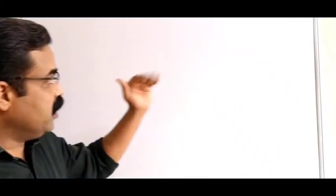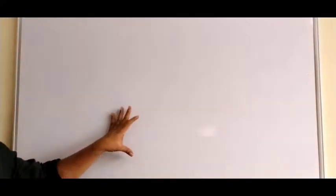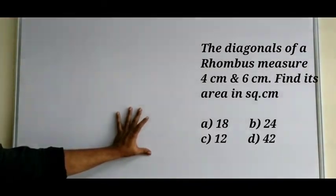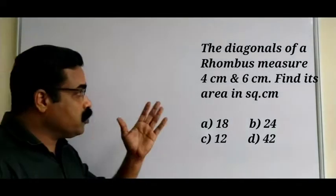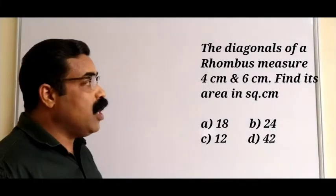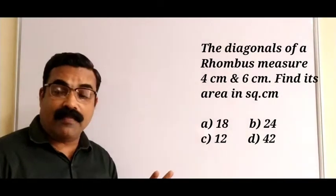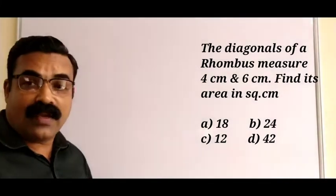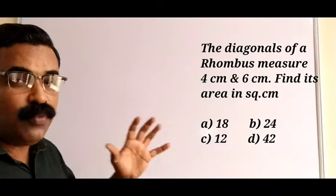Here is the first question: the diagonals of a rhombus measure 4 centimeters and 6 centimeters. Find the area in square centimeters. Four options are also given to you. Let us understand how to find the area of a rhombus when two diagonals are given.